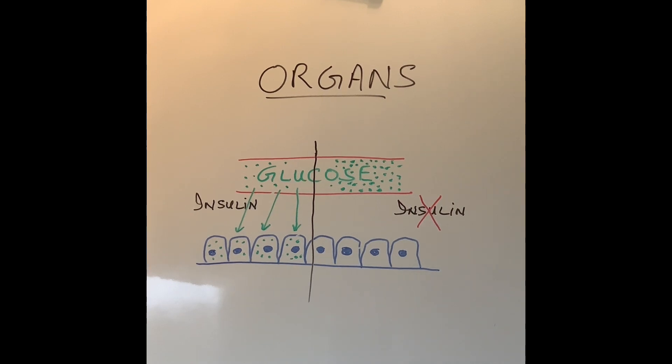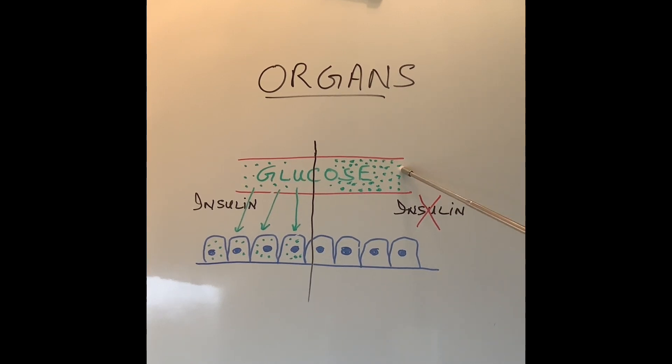Now you might ask what is the harm of having more glucose in our blood. There are two harms. Number one, because the glucose is not coming into our cells, our cells cannot function normally. As I said earlier glucose is the fuel in our body. There is no fuel going into the machinery. The machinery will stop working.